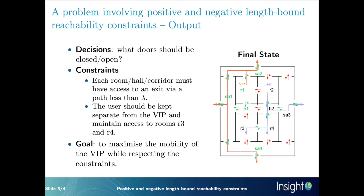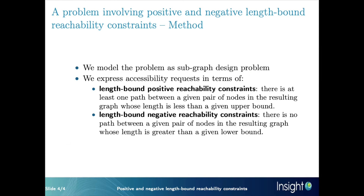Here we see a final state where the goal is achieved. The locations to which the VIP has access are colored in green. We see that indeed the user does not have access to any of those locations. We model the problem as a subgraph design problem and express accessibility requests in terms of length-bound reachability constraints. If you want to learn how we do it using constraint programming, come to our talk.